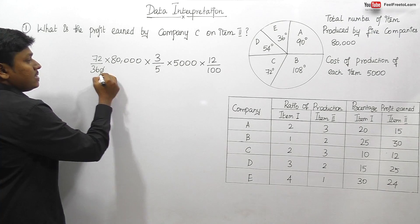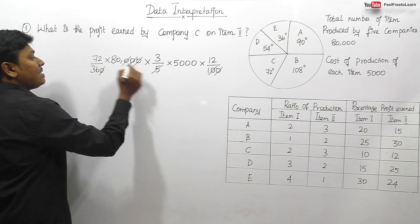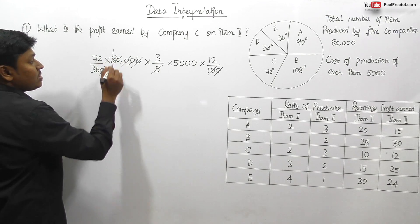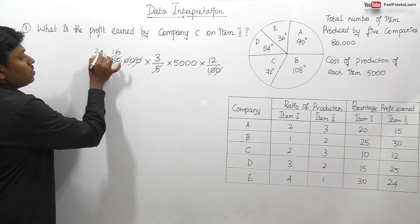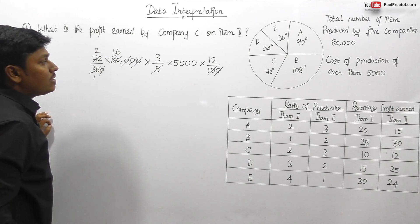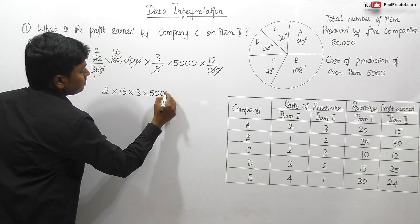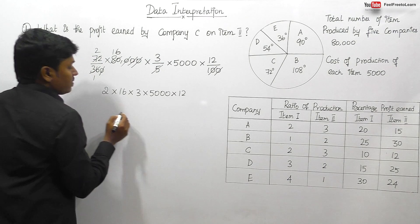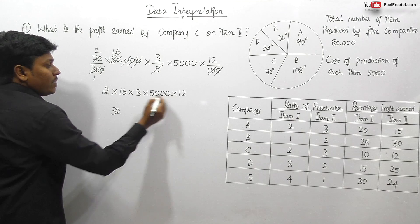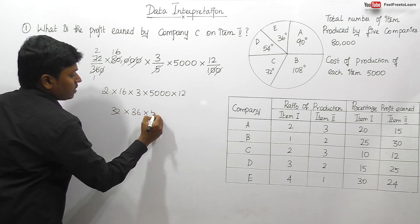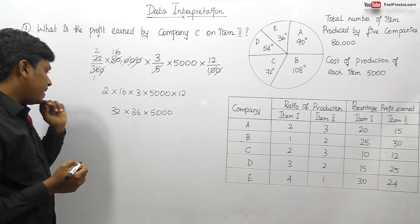Canceling zeros: we can cancel three zeros and simplify. After cancellation, 5 into 5 is 25, remainder 3 — giving us 16. So the remaining values are 2 × 16 × 3 × 5,000 × 12. Multiplying: 16 × 2 = 32 and 12 × 3 = 36, so we need 36 × 32 × 5,000.